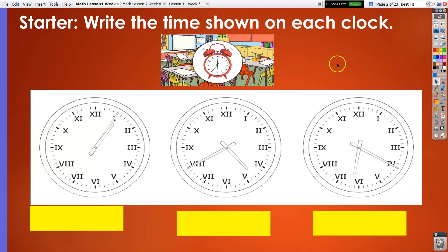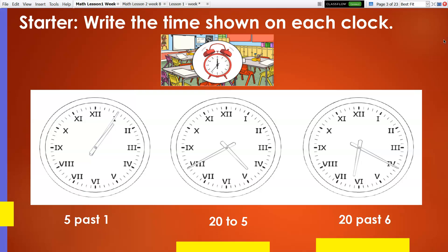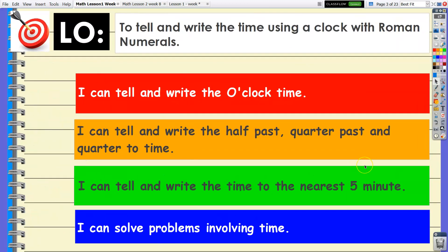Time is up. Now let's reveal the answers. For the first clock we got five past one. The second clock is twenty past five, and the third clock we got twenty past six.